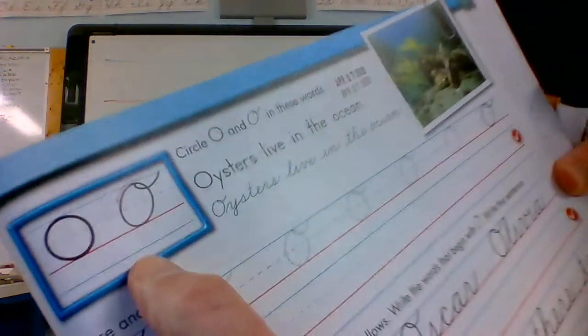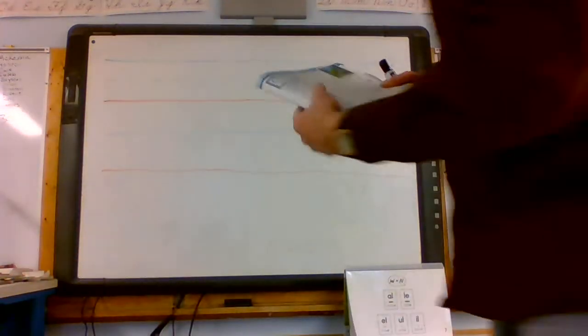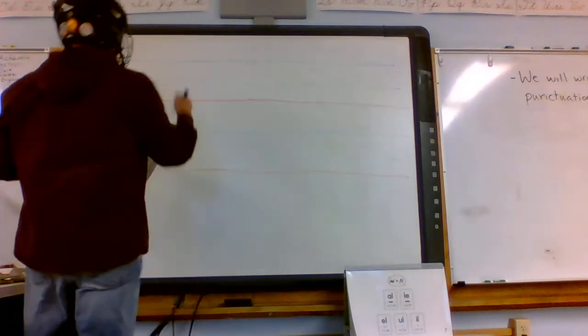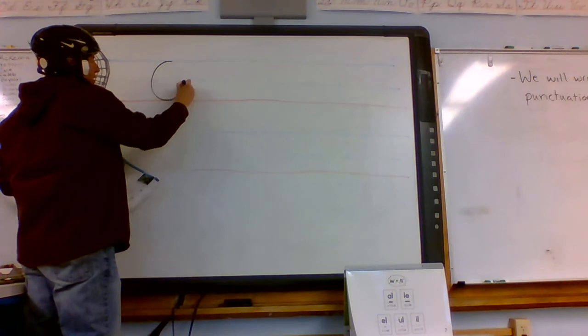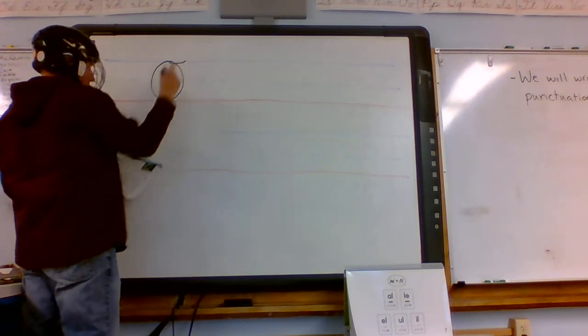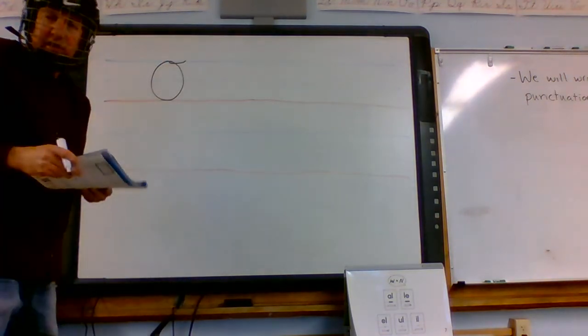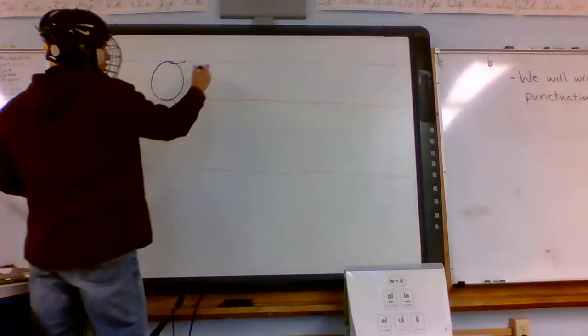You start right here at the headline, circle back down to the baseline, all the way up and check stroke. Just like the lowercase O, the capital O.